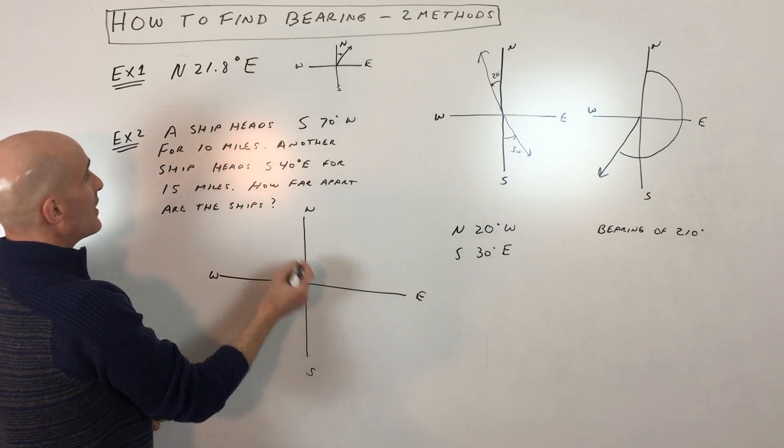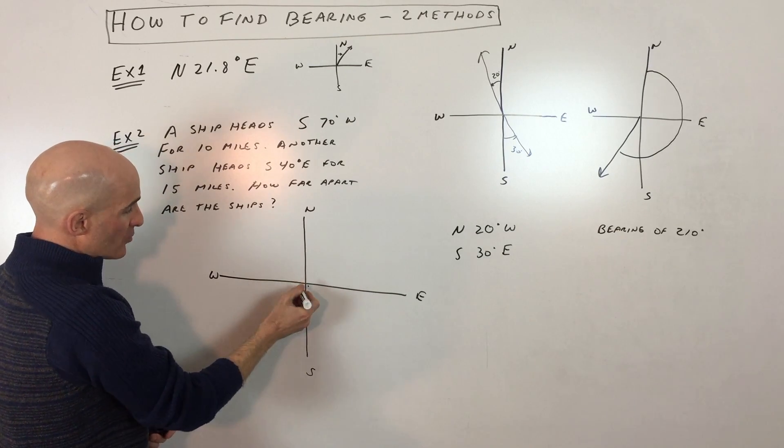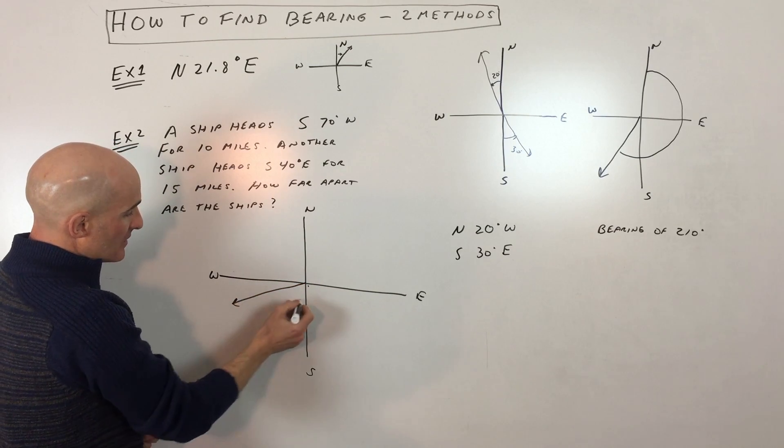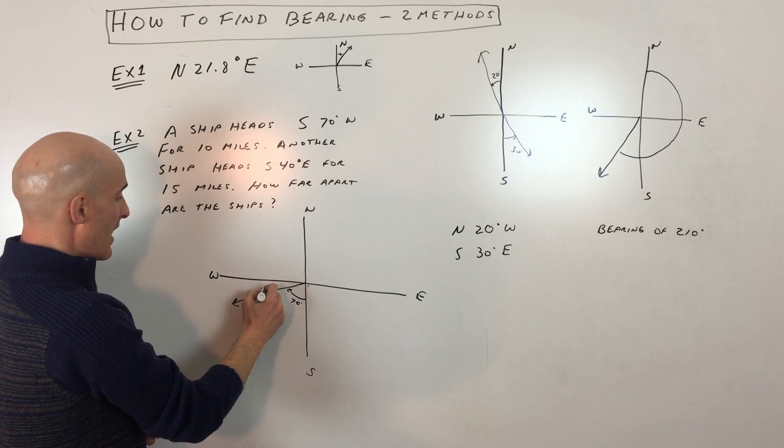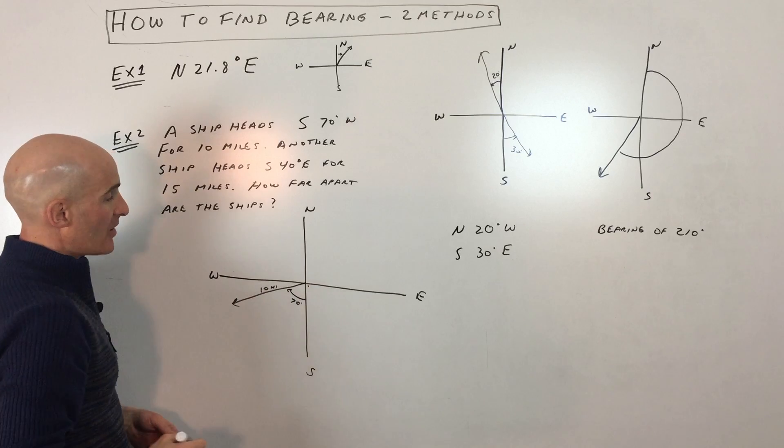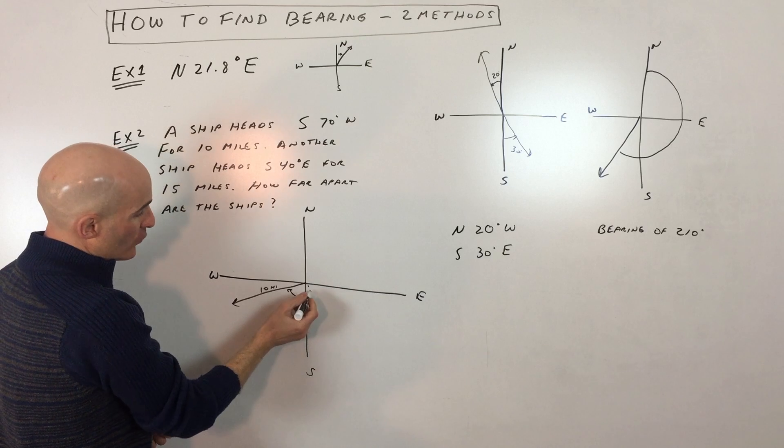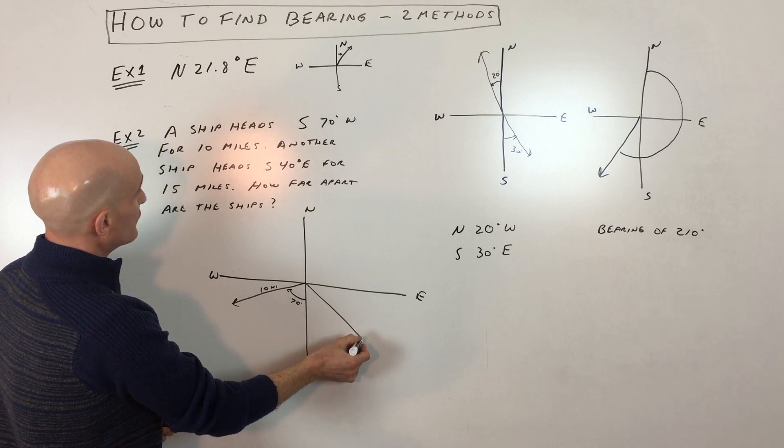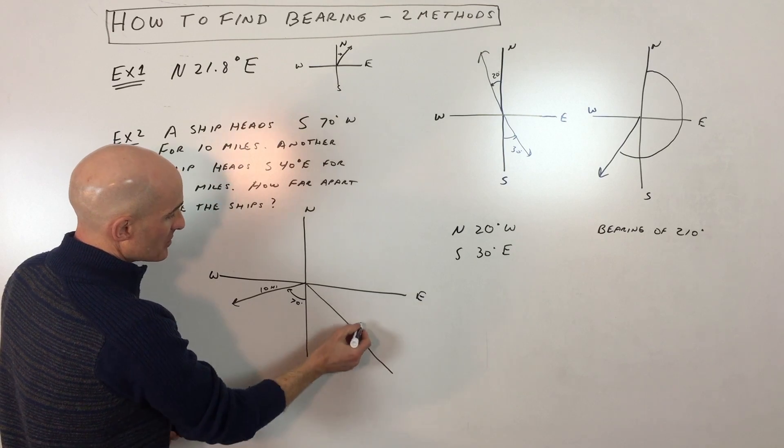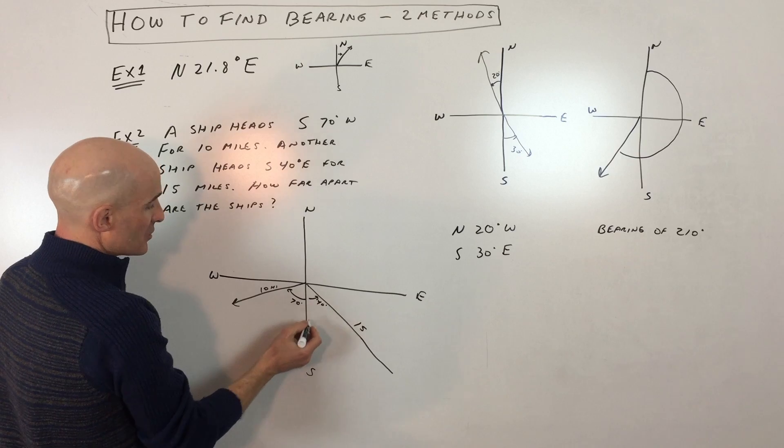Start at the origin and one ship is heading south. So we face south 70 degrees towards the west like that. So this is a 70 degree angle and it's going for 10 miles. So I'm just going to write 10 miles. The other one is south 40 degrees east. So we start facing south and we head 40 degrees towards the east approximately right there. And that's for 15 miles. It's a little bit longer. So that's south 40 degrees towards the east.